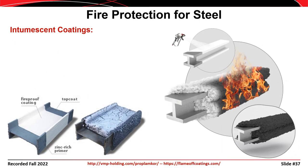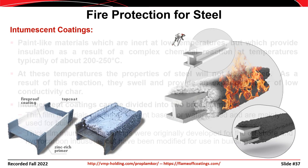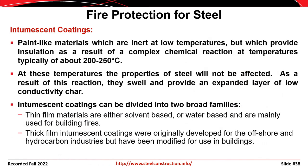Another option for fire protection is intumescent coatings. These coatings are paint-like materials that are inert at low temperatures but undergo a chemical reaction at temperatures around 400 to 500 degrees Fahrenheit to provide protection for the steel. Intumescent coatings can be a bit more expensive than other options and are often reserved for laboratory or industrial applications where sprayed-on fire protection is not effective or practical. These coatings are typically divided into two families: thin-film solvent-based or water-based coatings used typically in buildings, and thick-film coatings developed for the offshore oil industry.